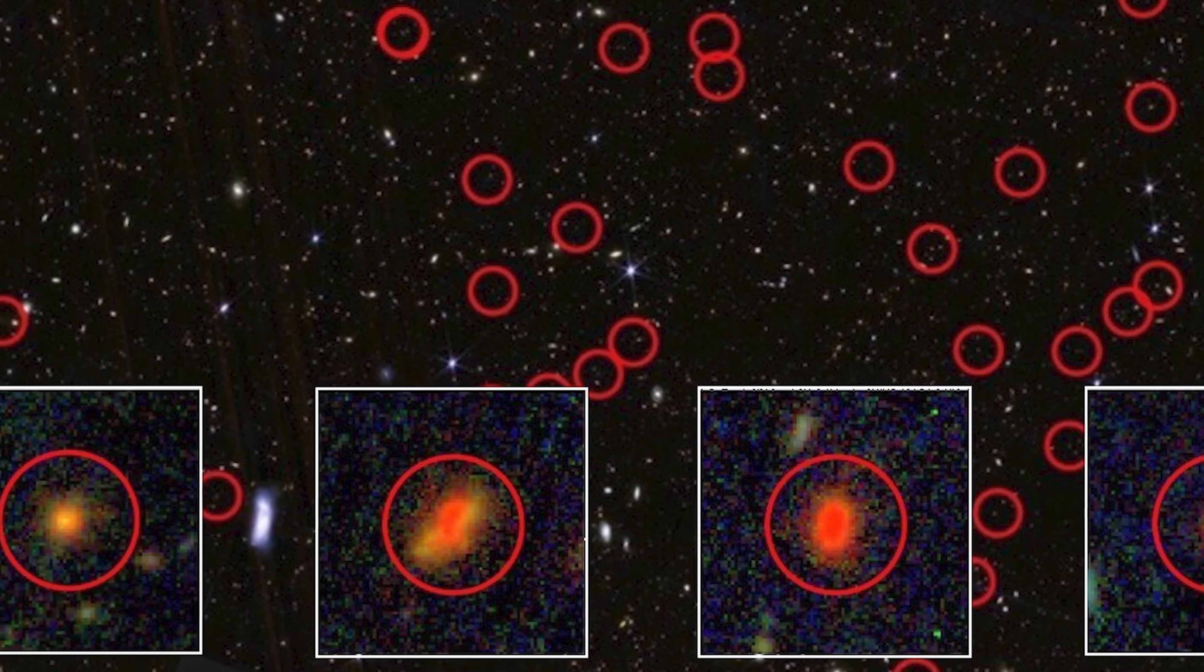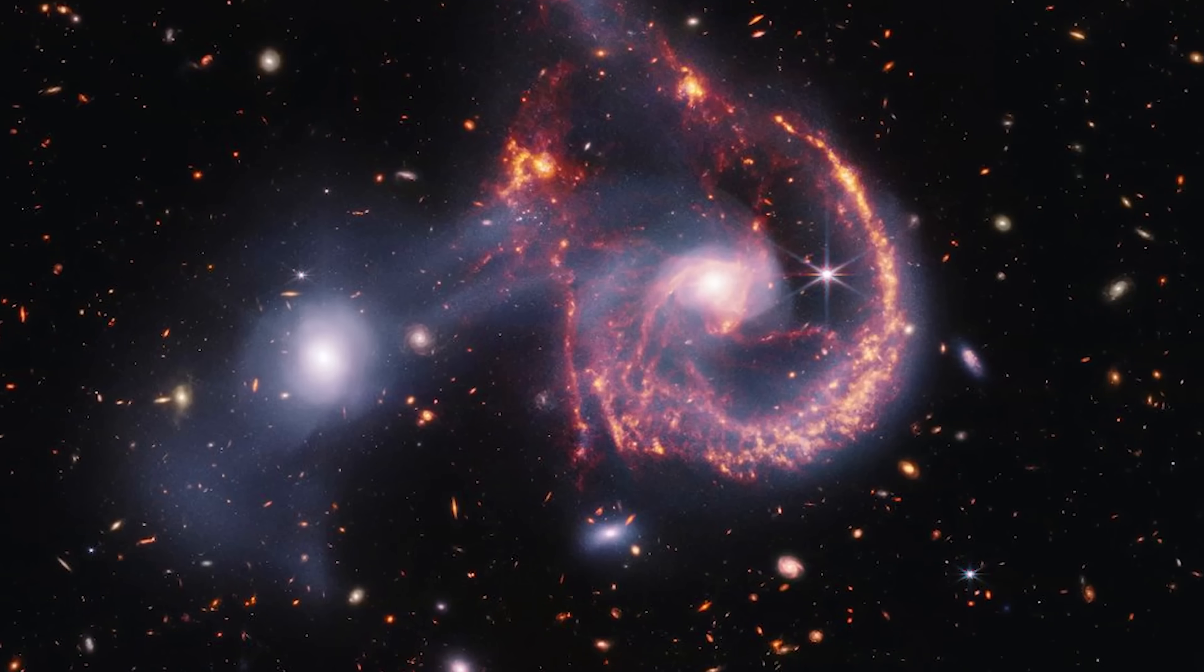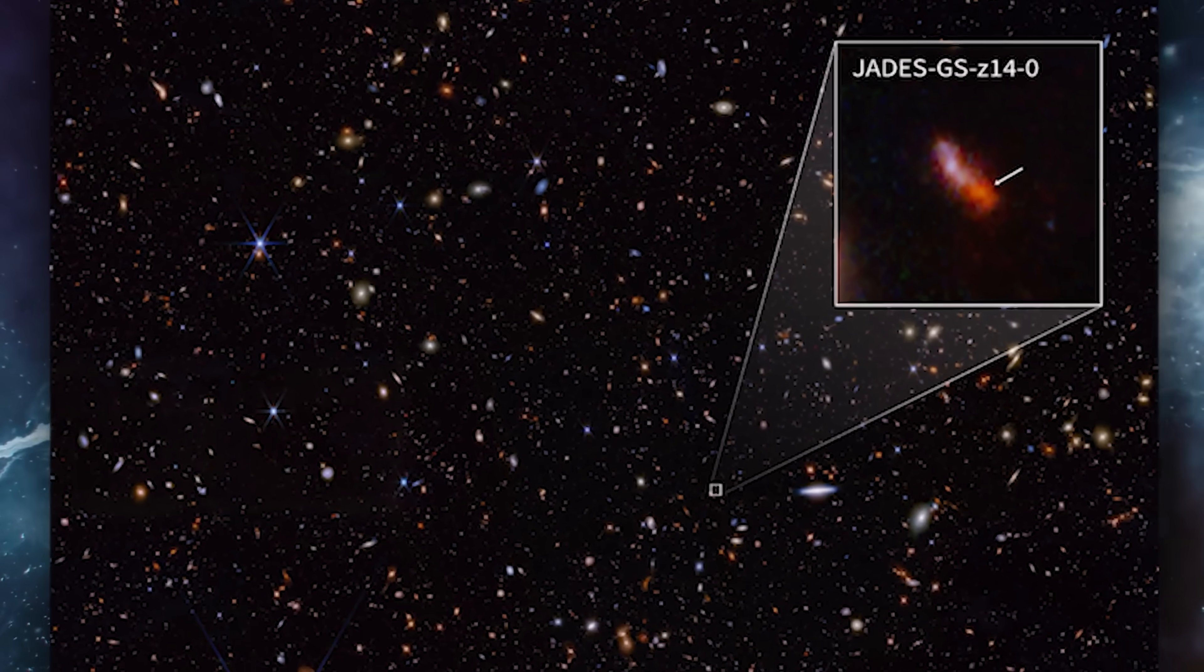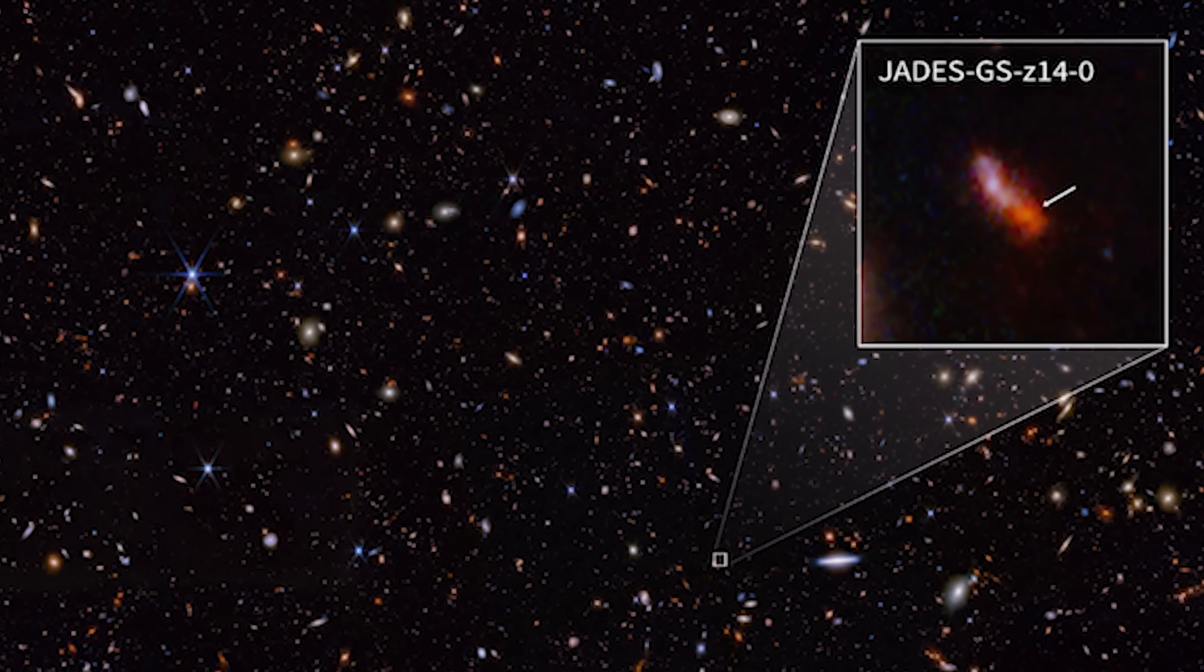Astounding images reveal multiple luminous anomalies, or blotches, scattered throughout the depths of space. One particular object captured the attention of astronomers due to its surprising brightness.